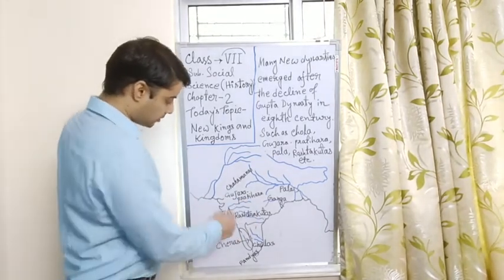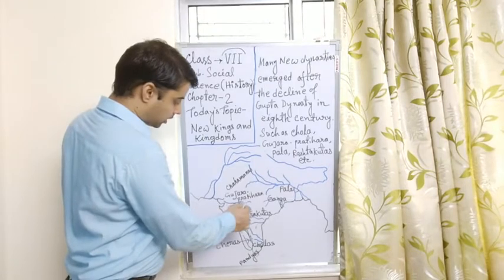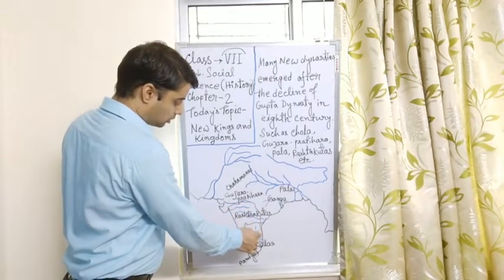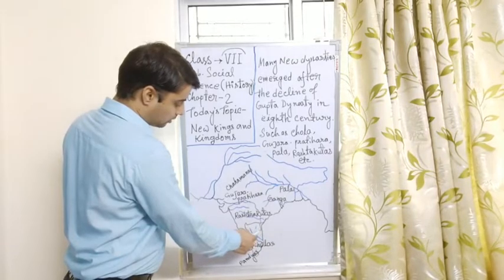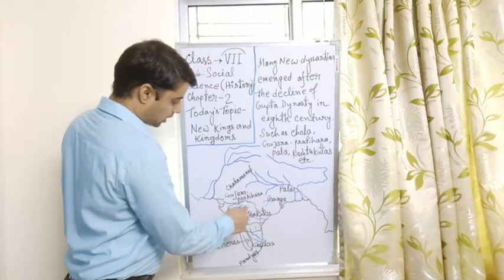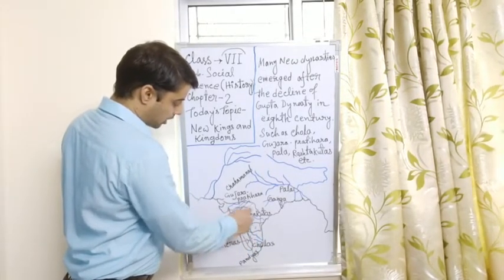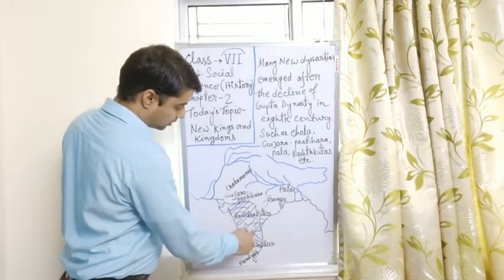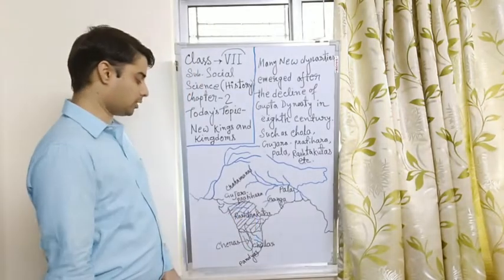Next one, Rashtrakuta. In the southern India, today's Maharashtra, some part of Telangana, another place also consists in the Indian area. In this area, I am marking some lines. In this area, it is a piece of Rashtrakuta dynasty.